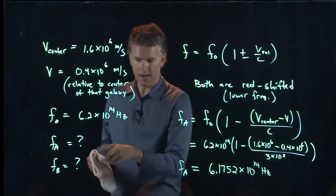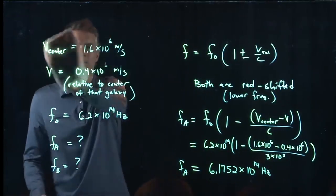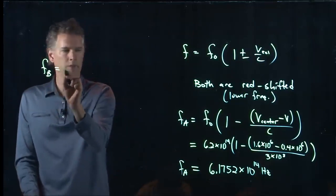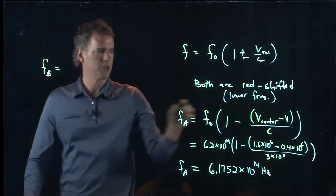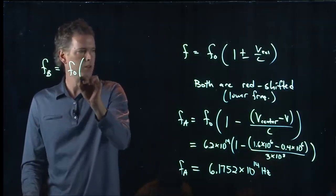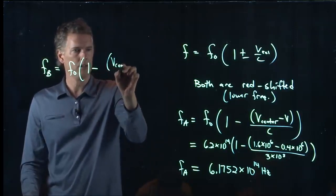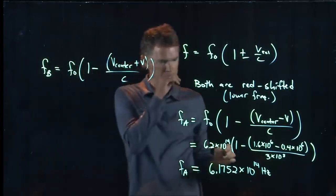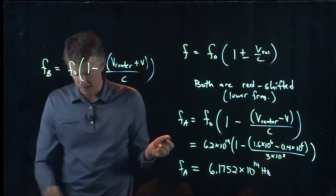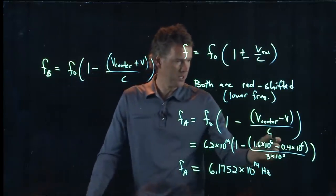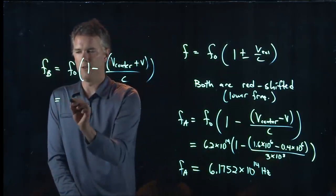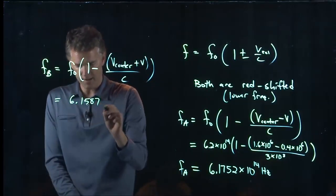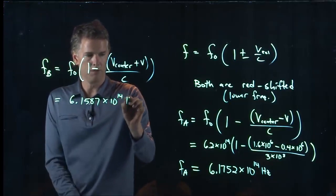Now, if you do the other side, frequency B, what do you get? Frequency B is going to look very similar, except we're going to change one of these signs. So it's 1 minus V center plus V all over C. And now it's the same numbers. You're going to plug in. You just put a positive sign right there. And if you do that, you should get 6.1587 times 10 to the 14 hertz.